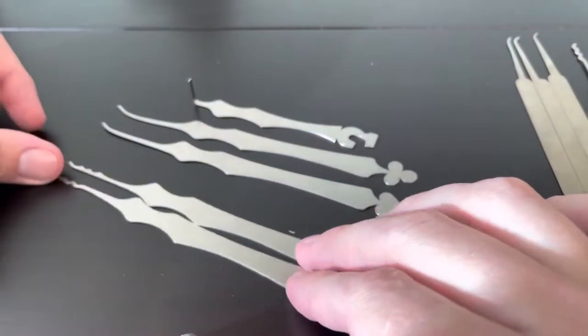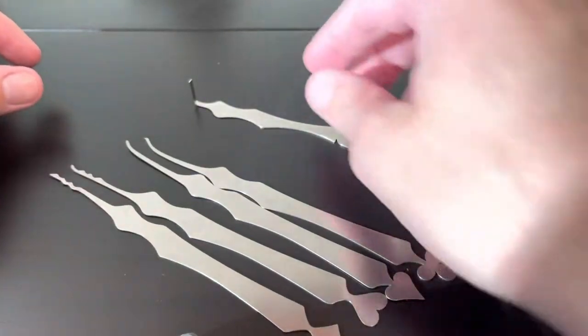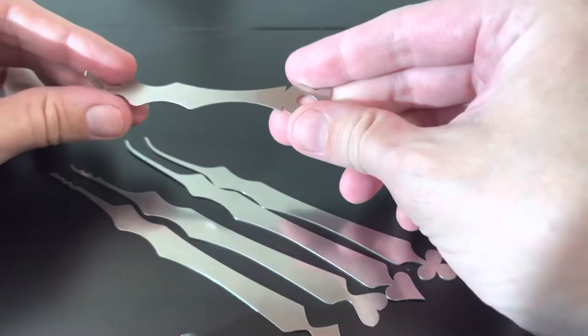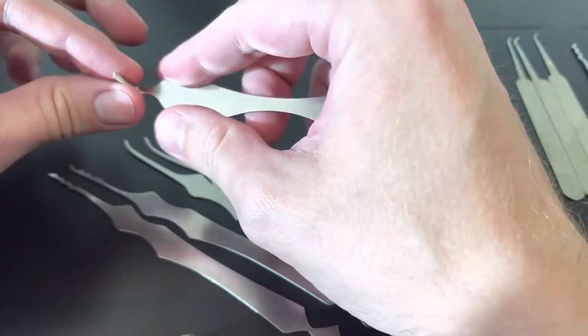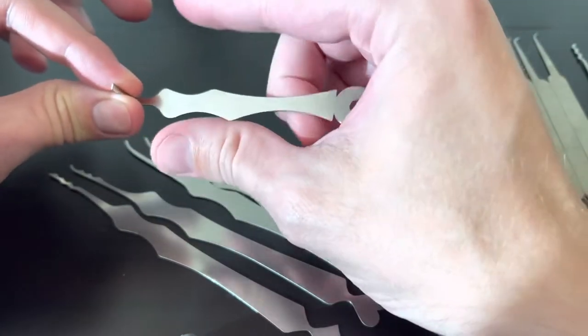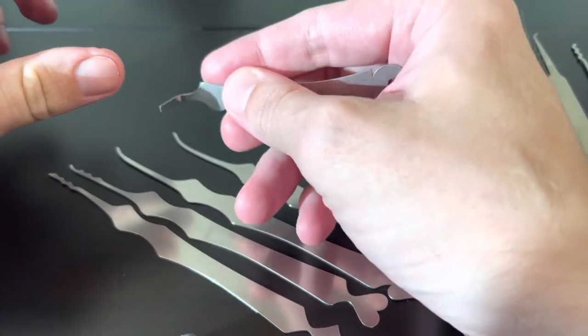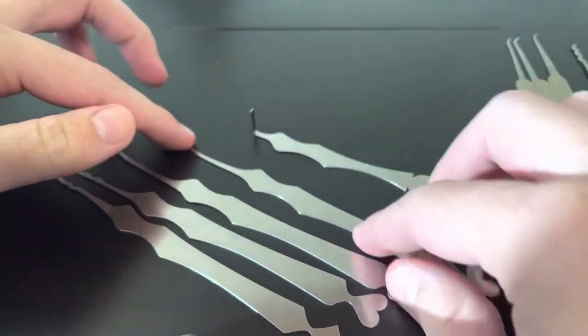So you see a range of hooks, two hooks, two rakes, and a tension tool. All of them have this very interesting cut to the side that depending on how you want to hold can be very comfortable.